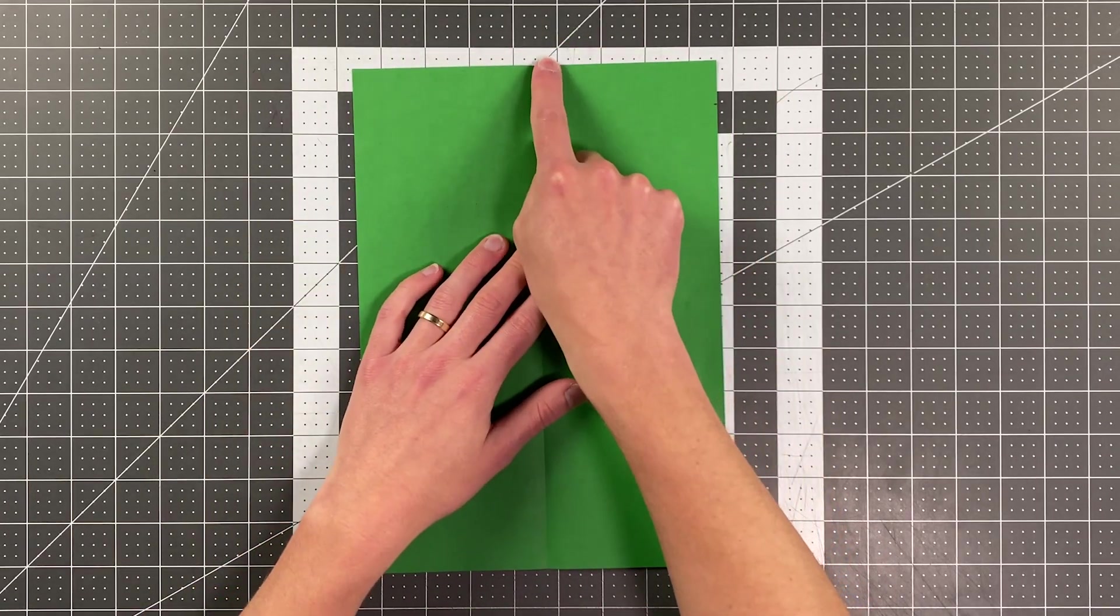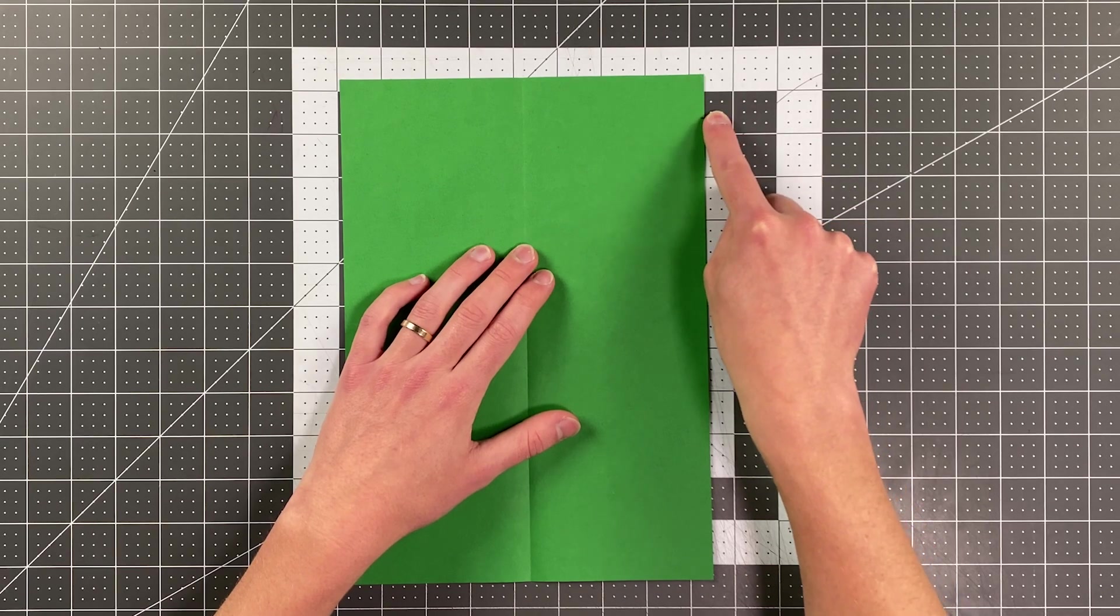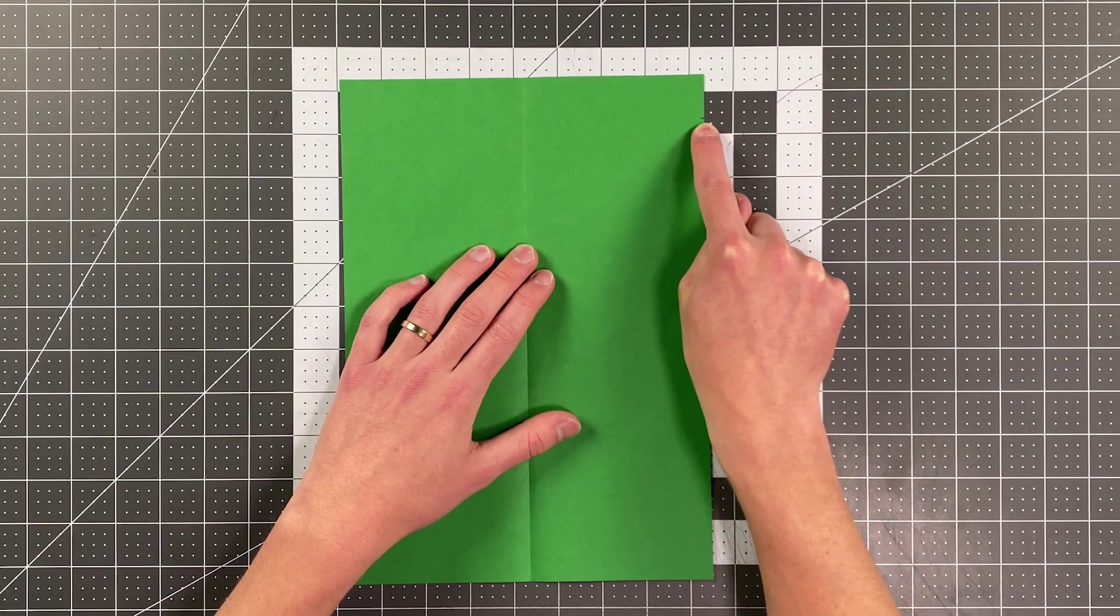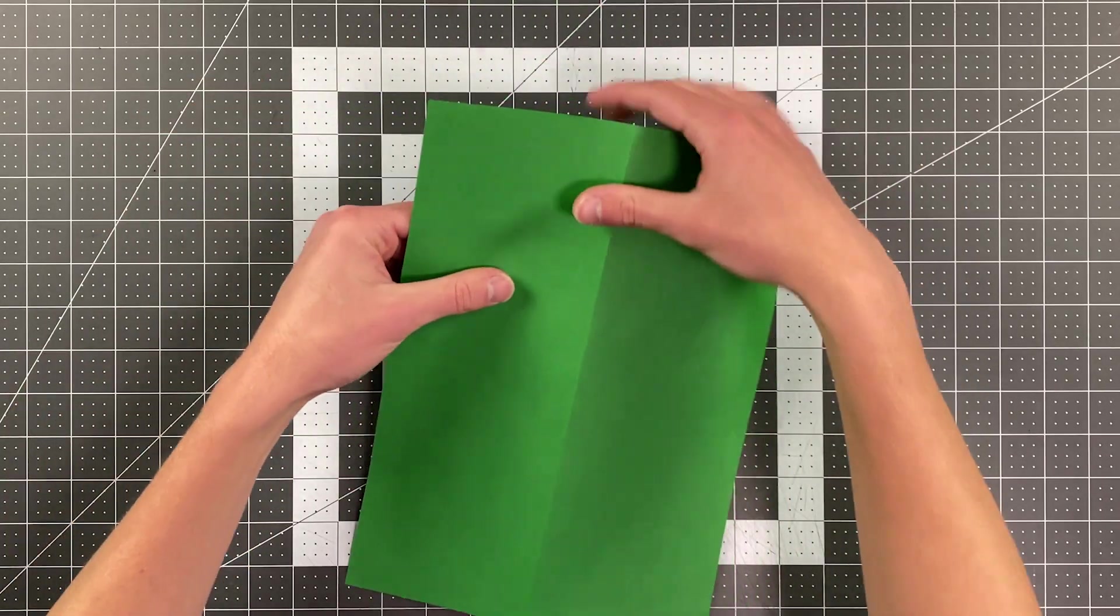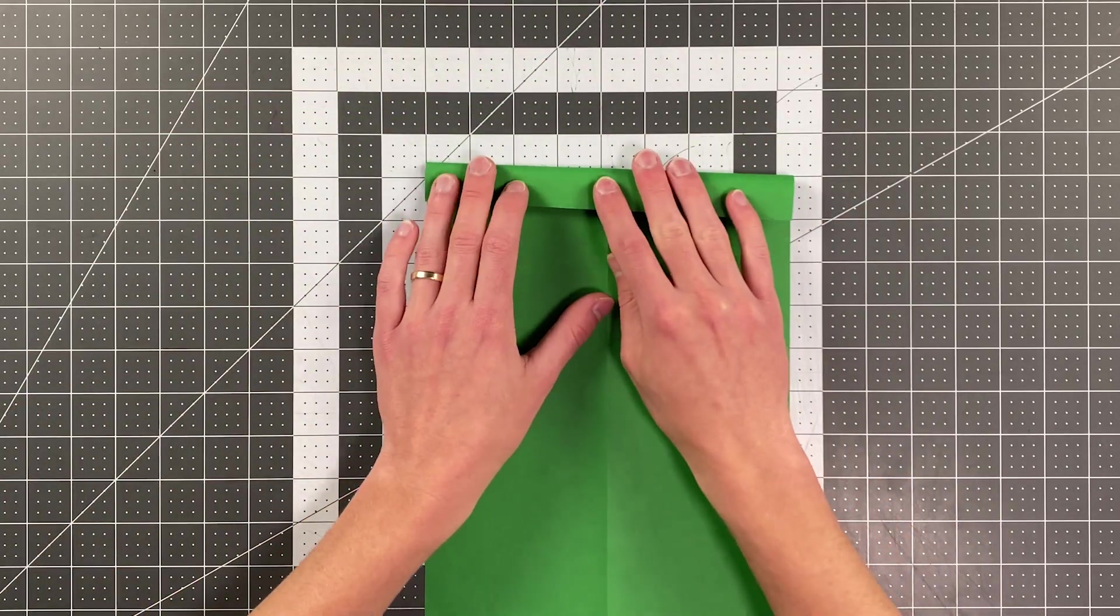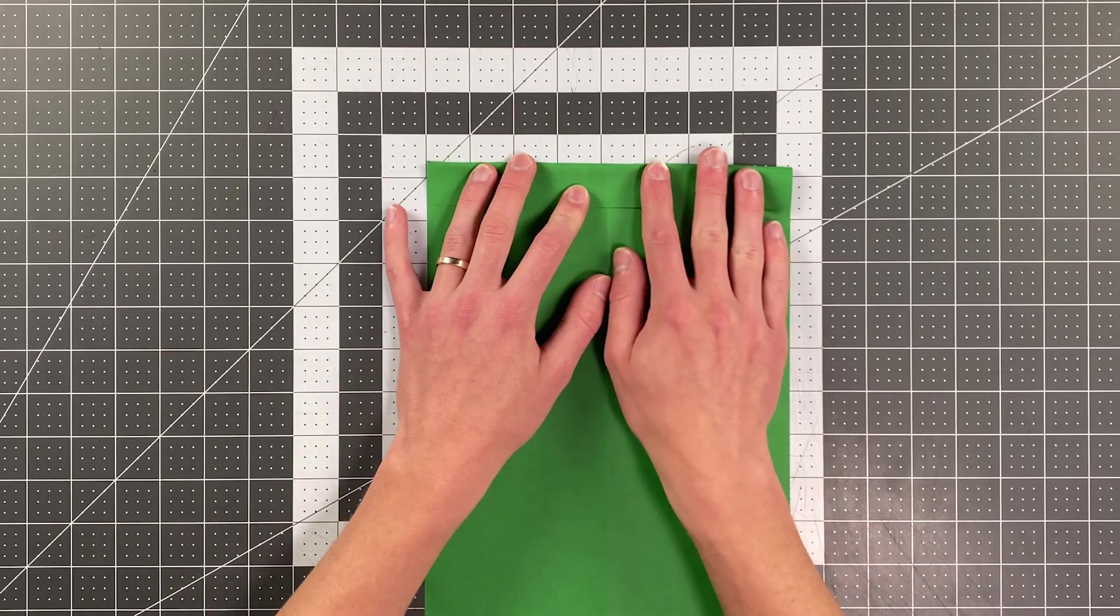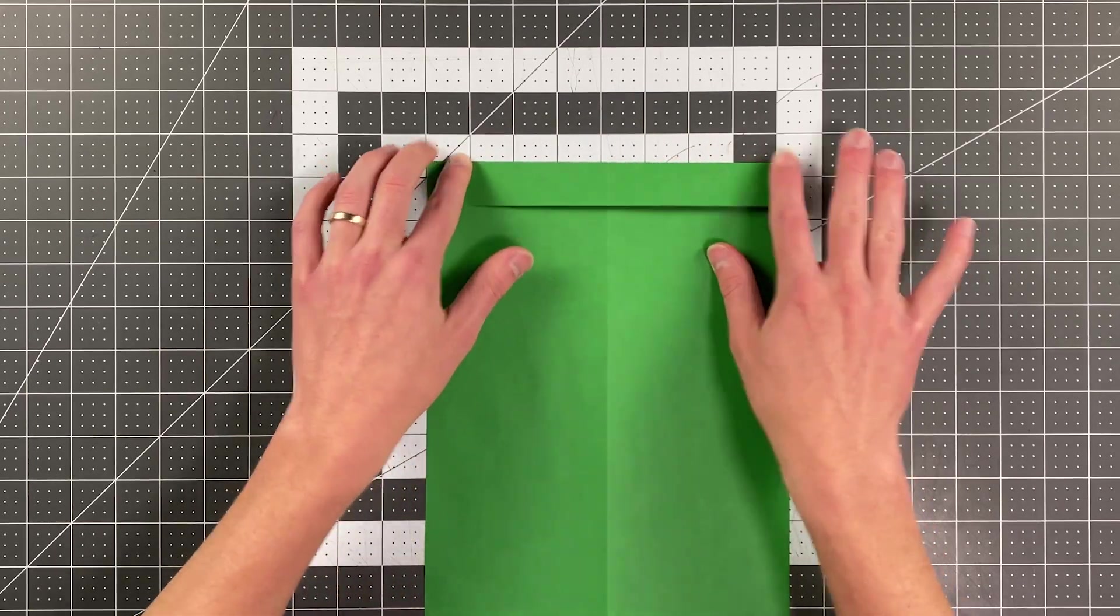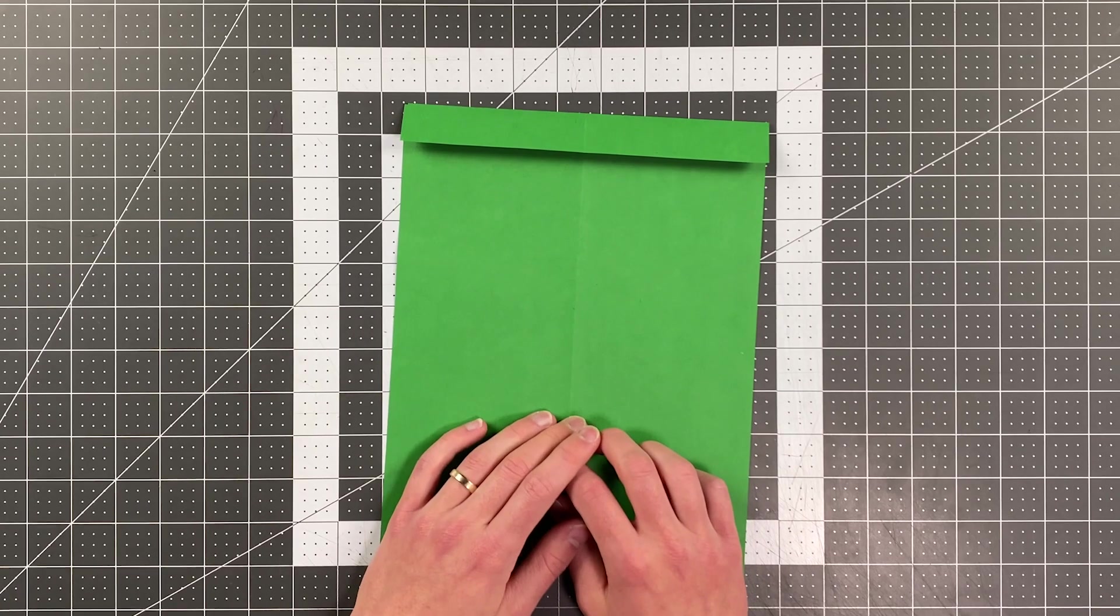And now we're going to fold the top two and a half centimeters of the paper down. So basically, measure along one of these edges two and a half centimeters and make a little mark. I've already done that. And I'm going to flip it over and pull this top edge down. Again, just two and a half centimeters. I'm looking for my mark over there. Making sure I'm aligned to that. Landing my center crease on the center crease.